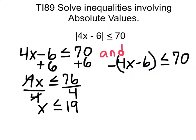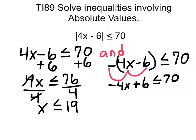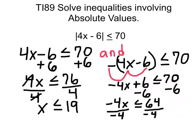Solving for the other inequality, we're going to distribute this negative sign to the two numbers within the parentheses. That gives us negative 4x plus 6 is less than or equal to 70. Subtract 6 from both sides: negative 4x is less than or equal to 64. Divide both sides by negative 4. Whenever you divide or multiply both sides by a negative number, you have to change the direction of the inequality. So that gives us x is greater than or equal to negative 16.